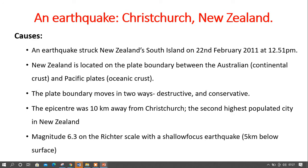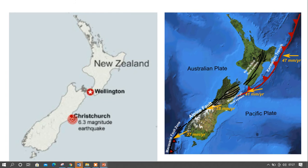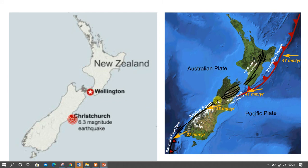Looking at a map: you have the Australian plate and the Pacific plate, with Christchurch located between them — these plates are the major cause of the earthquake. The boundary is both destructive and conservative. Looking at the arrows on the diagram, the plates are moving side by side, creating a build-up of friction, which leads to a build-up of pressure. Once released, this causes a massive earthquake. That is why there is a high distribution of earthquakes within this region.